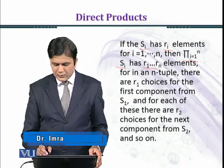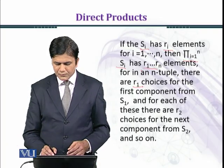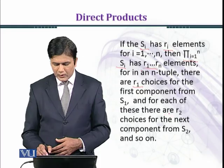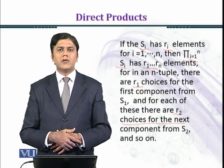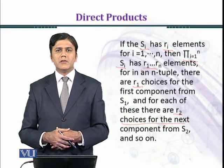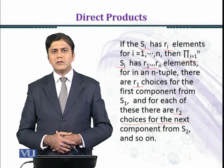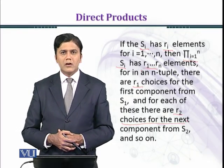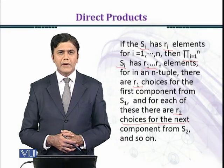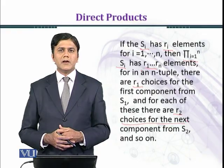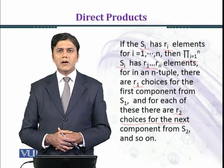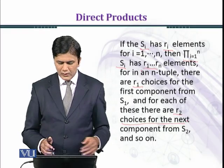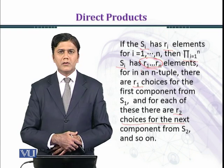In an n-tuple, there are r₁ choices for the first component from S₁, and for each of these there are r₂ choices for the next component from S₂. In a similar manner we have rₙ choices for the component from Sₙ. So the order of the direct product ∏Sᵢ, where each |Sᵢ| = rᵢ, is r₁ × r₂ × ... × rₙ.